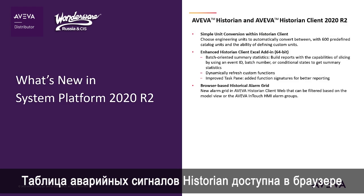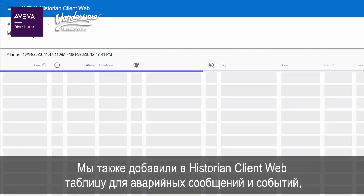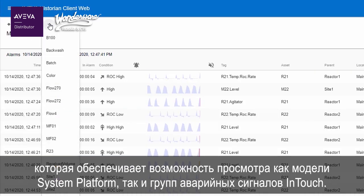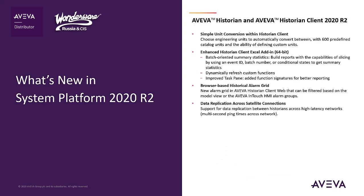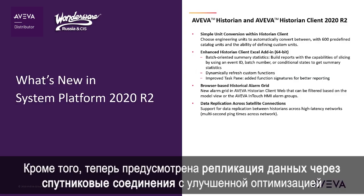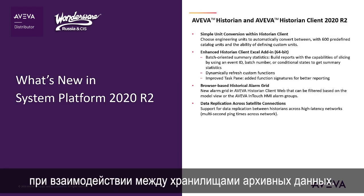Browser-based Historical Alarm Grid. We've also added an Alarm Grid to Historian Client Web, supporting both the System Platform Model View and InTouch Alarm Groups. In addition, data replication across satellite connections with greater optimization and support for high latency networks between Historians.